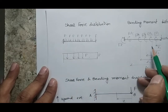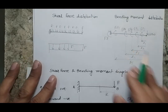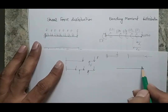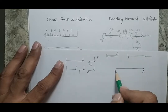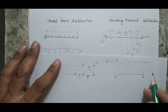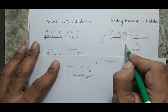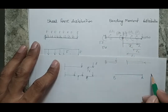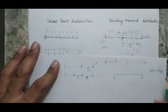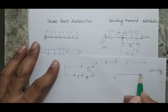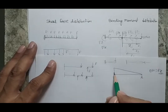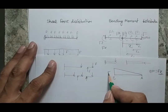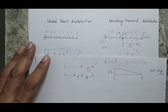The shear force diagram is a straight horizontal line at value F — all points experience the same force F. The bending moment diagram is different: it is zero at point A (where force is applied) and increases linearly toward point B (the fixed end). The bending moment at distance x is M = Fx, which is a linear function of x. At the fixed end where x = L, the bending moment is F × L.